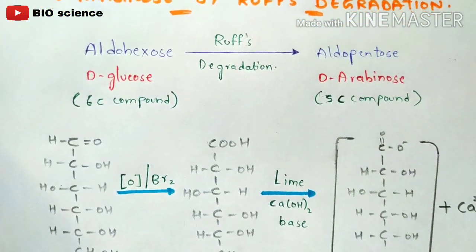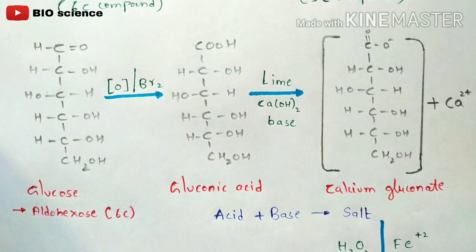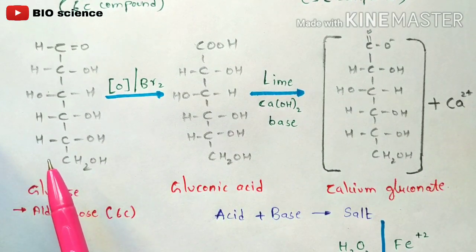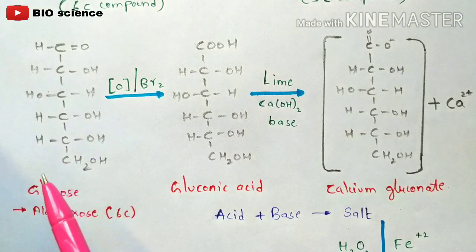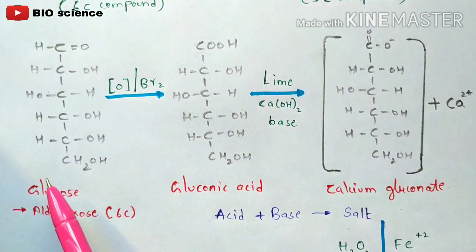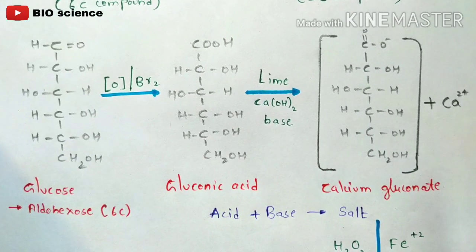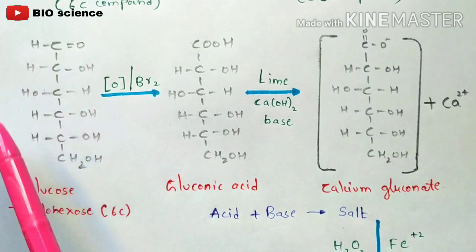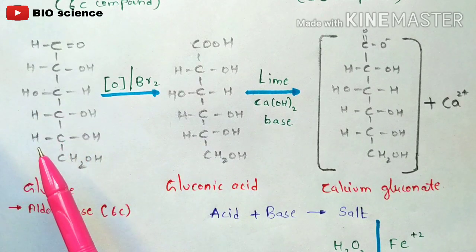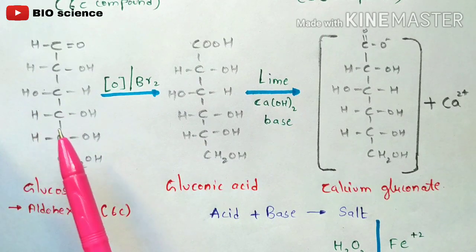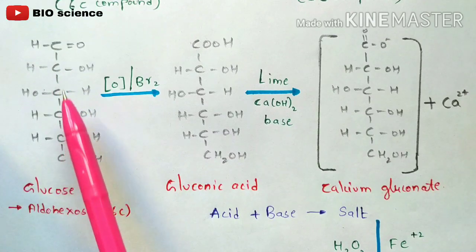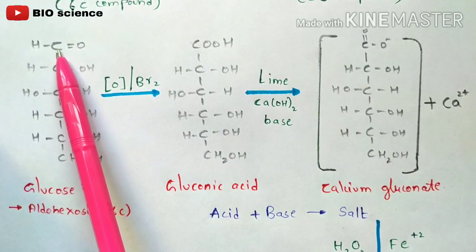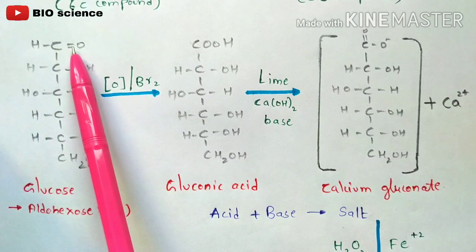If you see the structure you can properly understand. This is the aldohexose structure — a 6-carbon compound. Count here: first carbon, second carbon, third, fourth, fifth, and sixth. Totally 6 carbons are present and the first carbon has an aldehyde group — CHO is the aldehyde group. Hence it is called aldohexose.